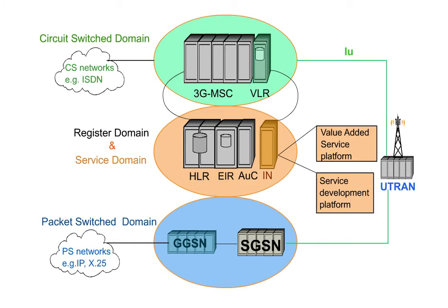In the first phase of UMTS, modified network elements from the GSM network will be used in the circuit switch domain of the core network. In the packet switch domain of the core network, the GPRS network will be used. This consists of the network elements gateway GPRS support node and a serving GPRS support node that's been modified for UMTS.